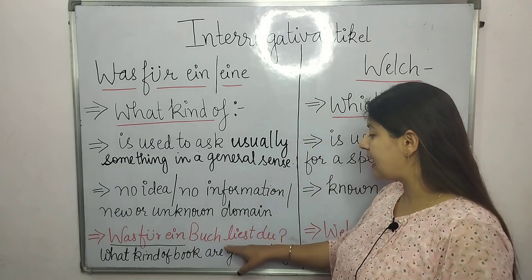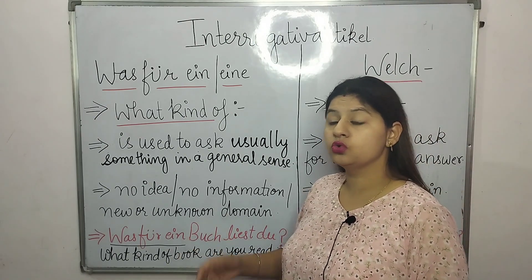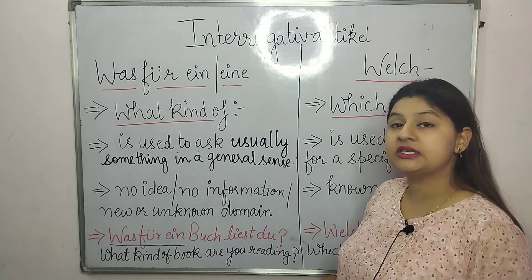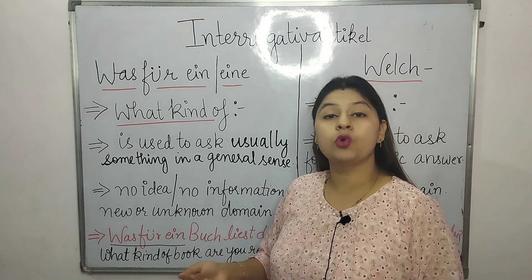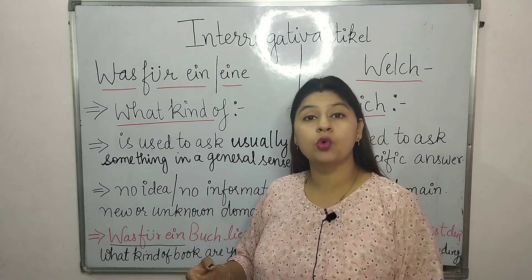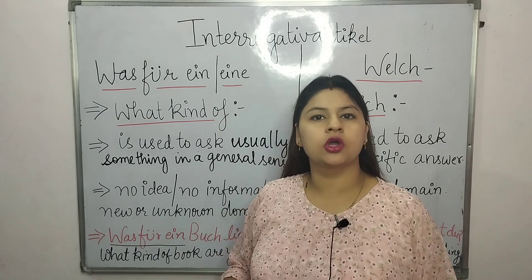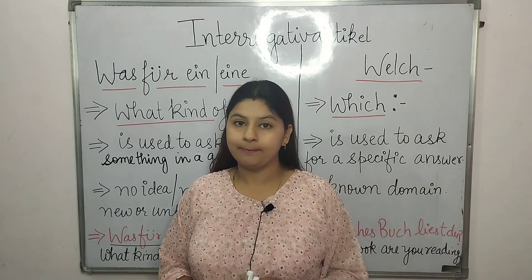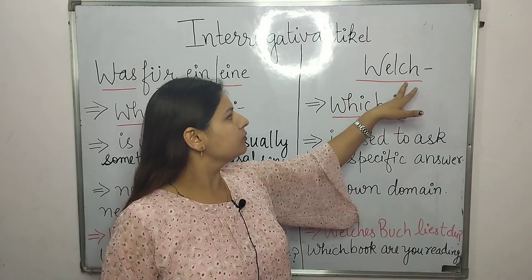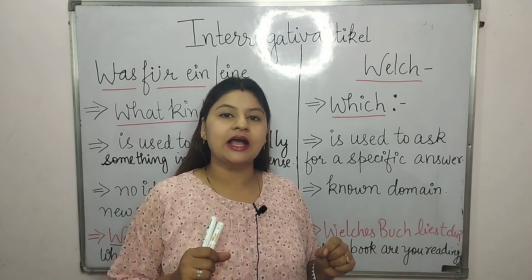For example: 'Was für ein Buch liest du?' — what kind of book are you reading? In this case we have no idea — it can be a novel, it can be a magazine, it can be any book. Opposite to 'Was für ein/eine,' we have 'Welcher,' which has endings we learned in our last class.